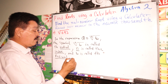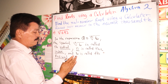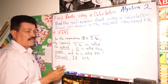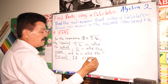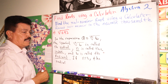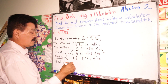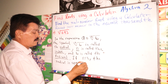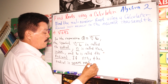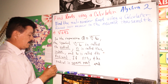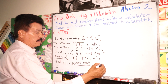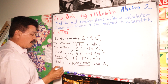And then, if N is equal to 2 — another idea — the radical is a square root. And the index 2 is not written.